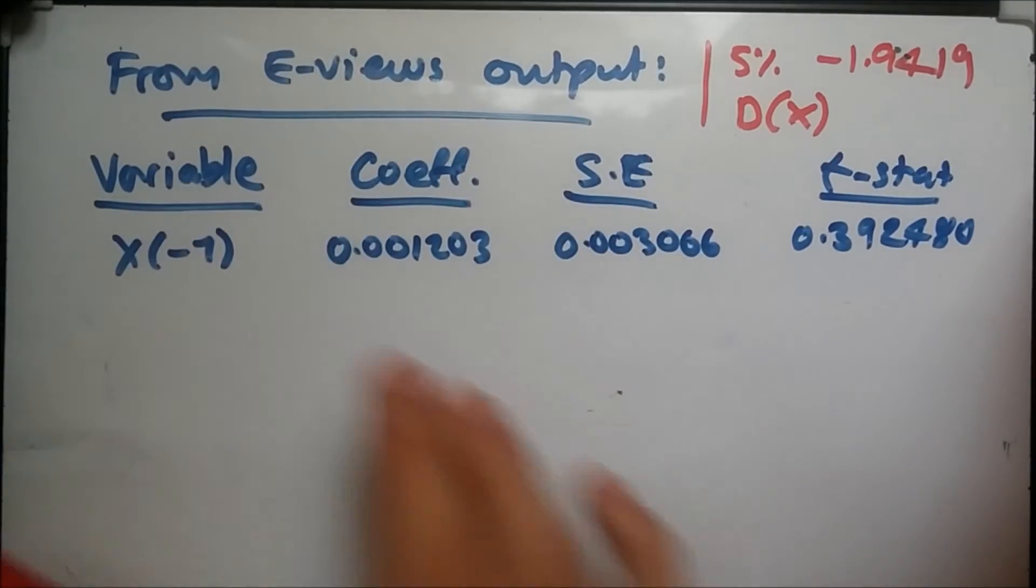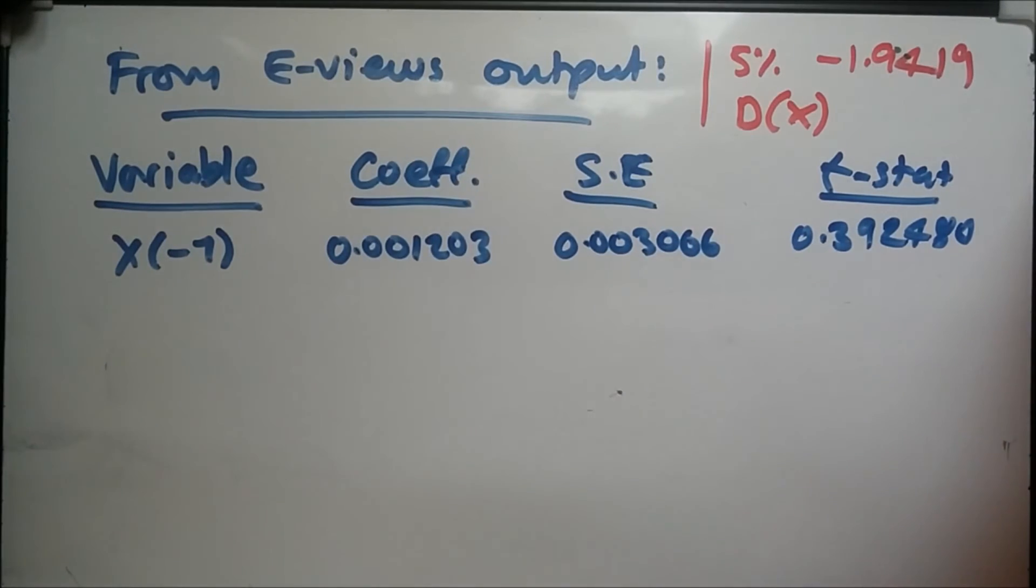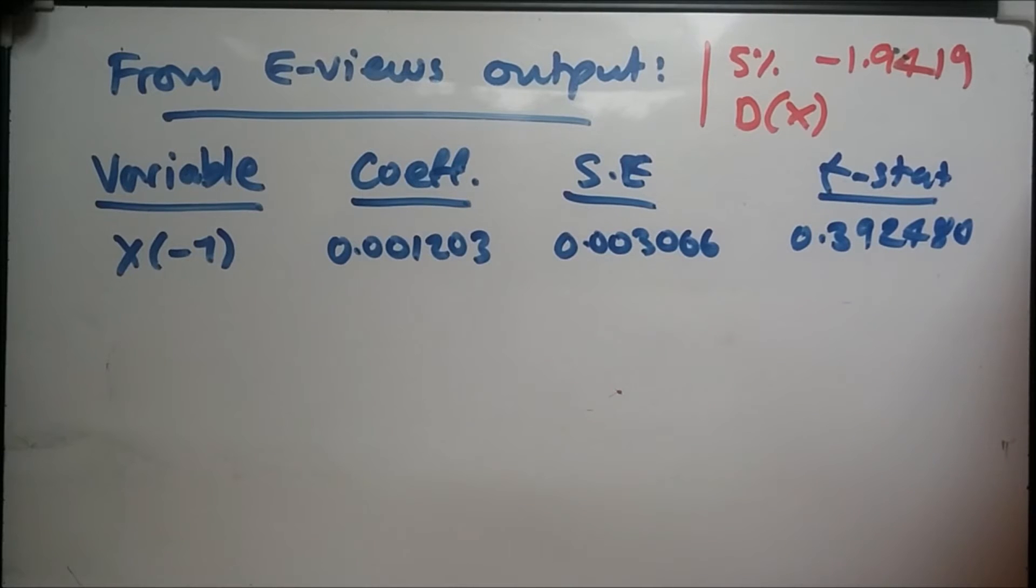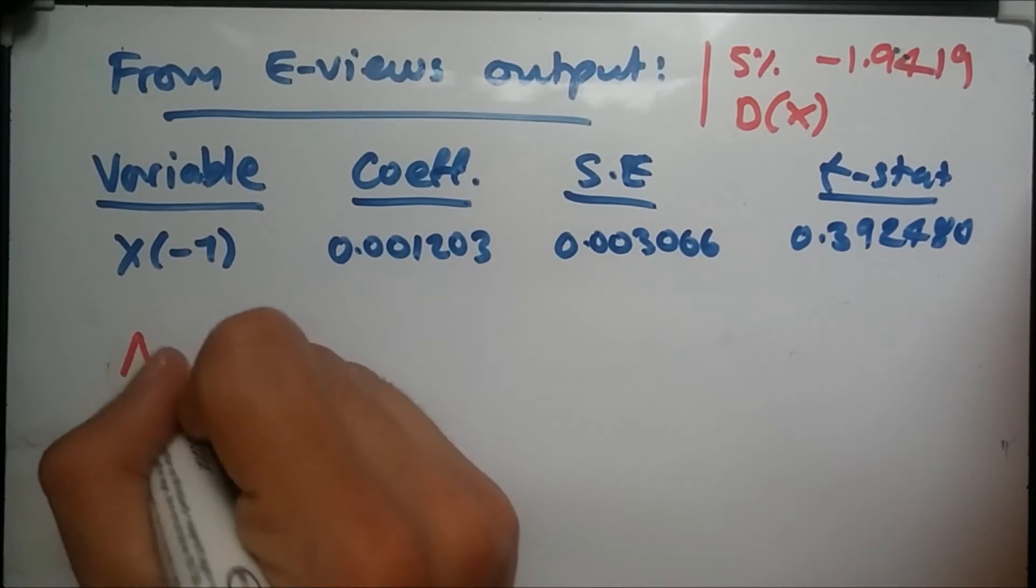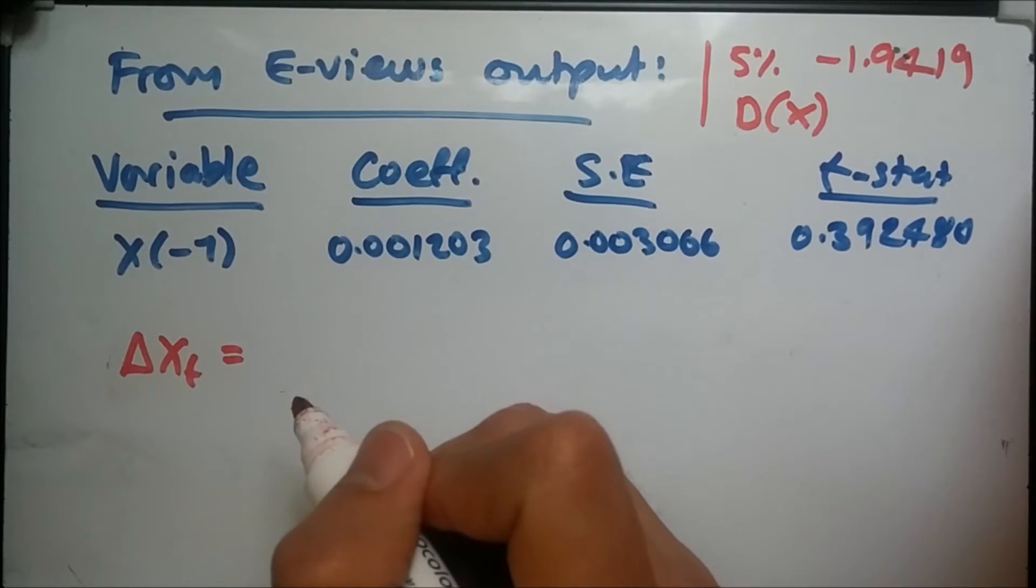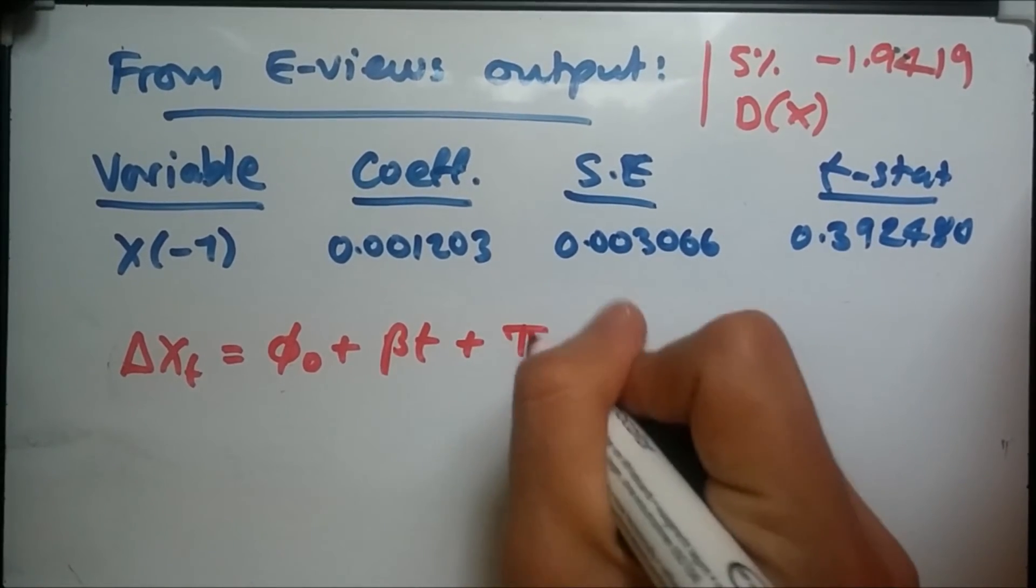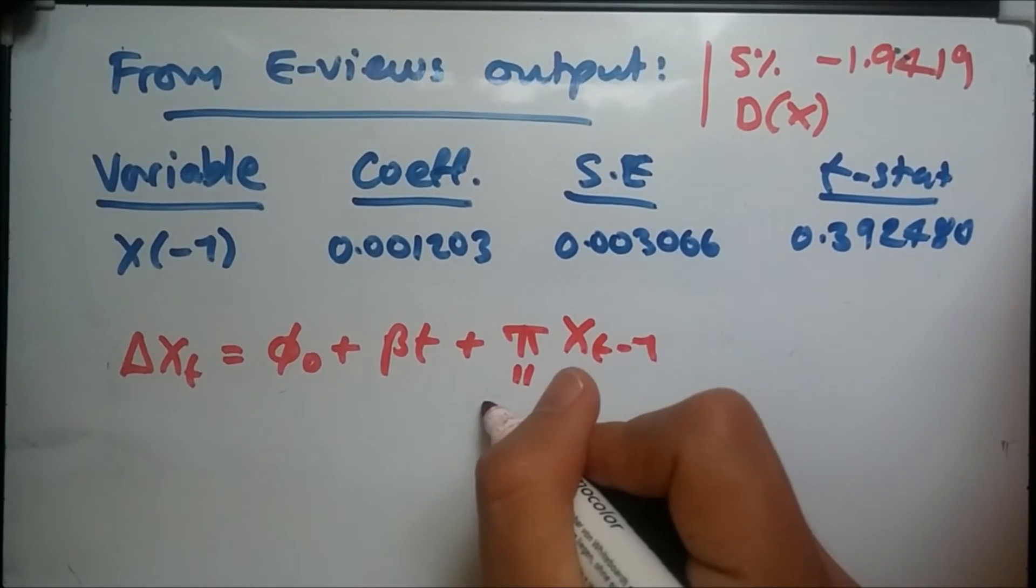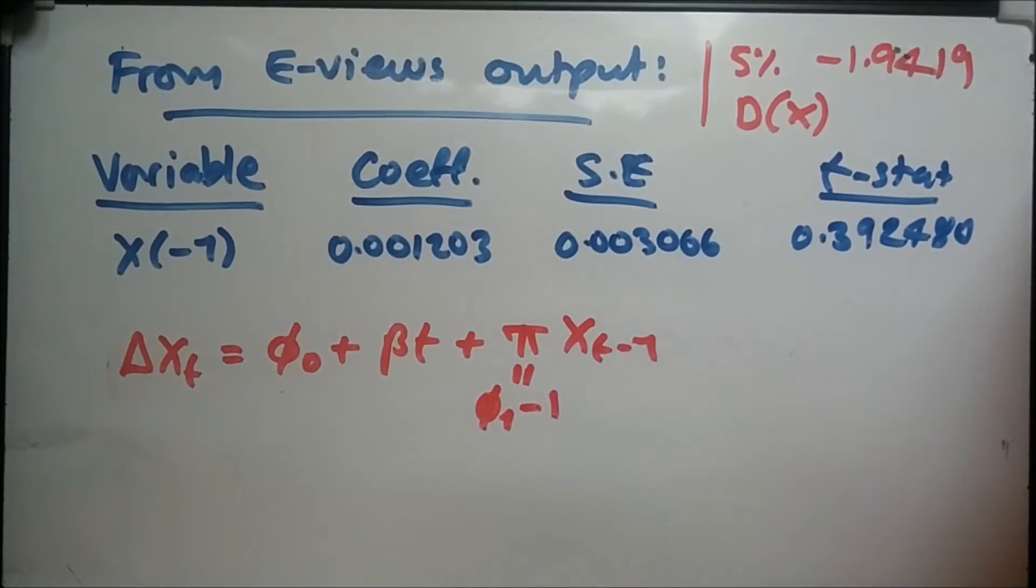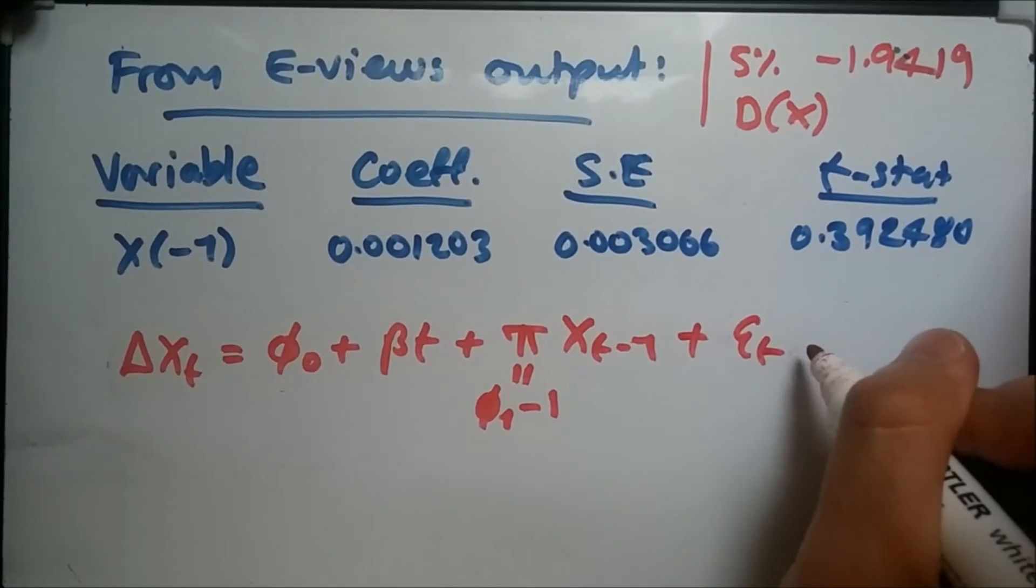Let me write all this down. Let's record the value 0.001203. We're back on the whiteboard. Here we are straight from the EViews output. I put the variable, the coefficient, standard error, and the t-stat right here. Also note I got the 5% critical value and I wrote DX representing delta X, the first difference or the first change. Let's write down the theoretical definition. First we have delta X_t equals - in this case we have phi_0 plus beta t plus pi X_t minus 1 where pi we said earlier was phi_1 minus 1, plus epsilon_t.